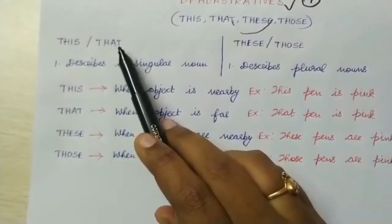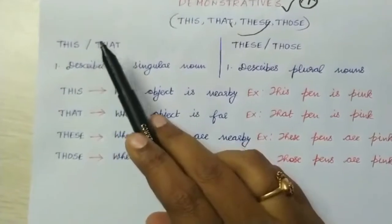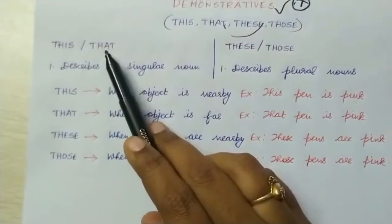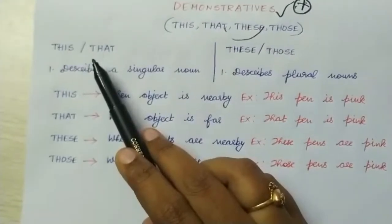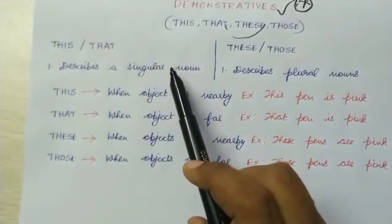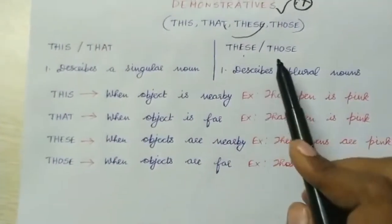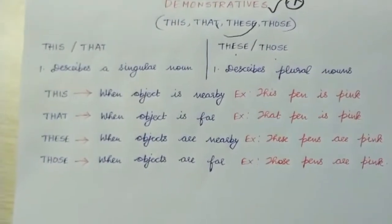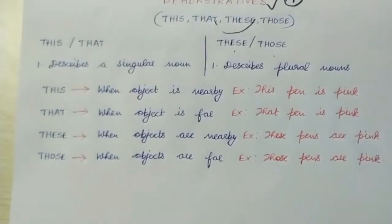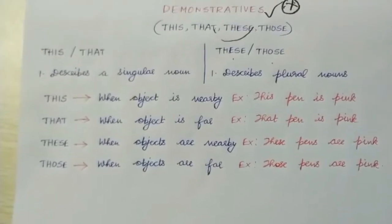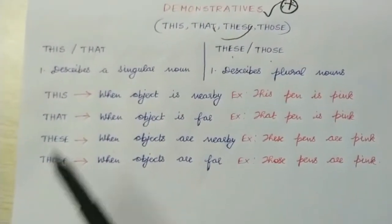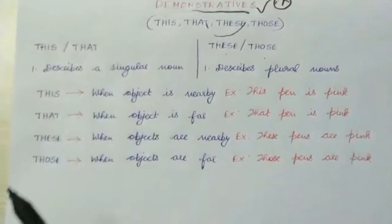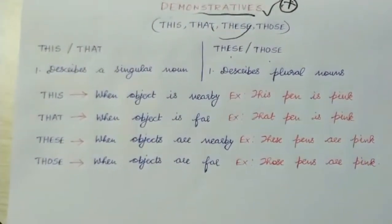This, that, both these adjectives indicate a singular noun. They describe a singular noun. These and those. These two adjectives describe plural nouns. We know that adjectives describe nouns. Demonstratives are a special kind of adjectives.